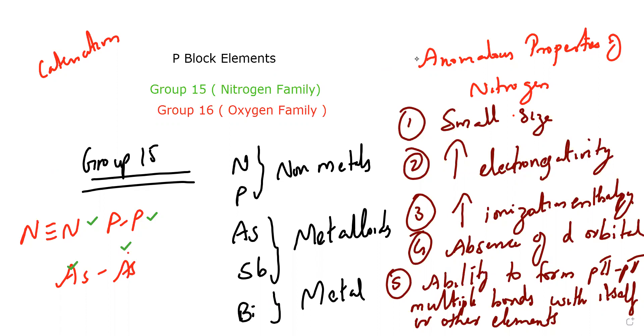One more question they can ask, especially for MCQs or one marker questions: Why is the nitrogen-nitrogen single bond (N-N) weaker than the P-P single bond? The answer is because of the high inter-electronic repulsion.